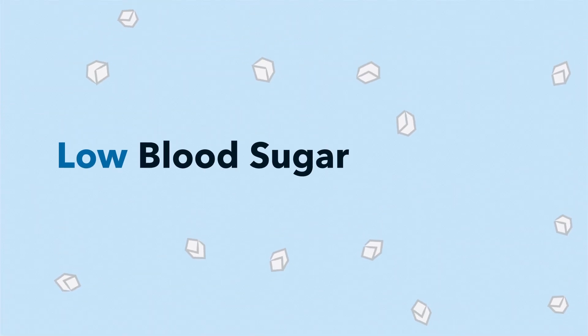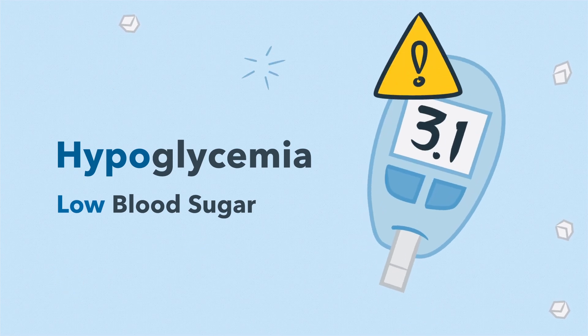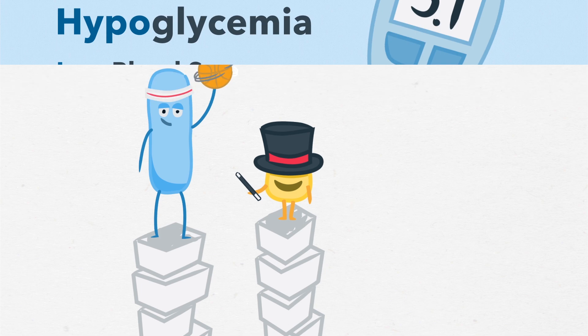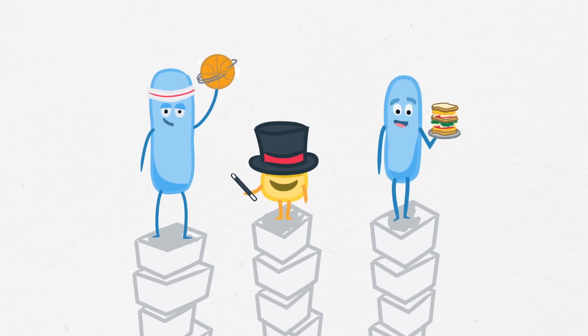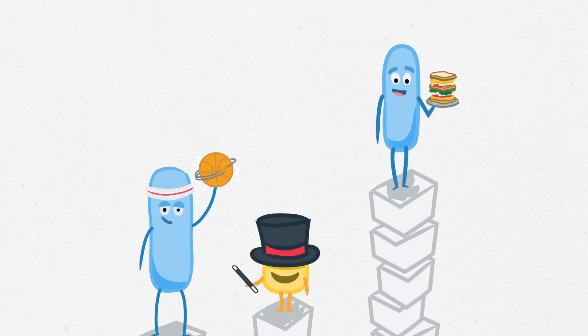Low blood sugar is also called hypoglycemia. It's when blood sugar drops below 4.0 millimoles per liter. Remember, insulin and physical activity lower blood sugar, while the carbohydrates in food cause it to rise.